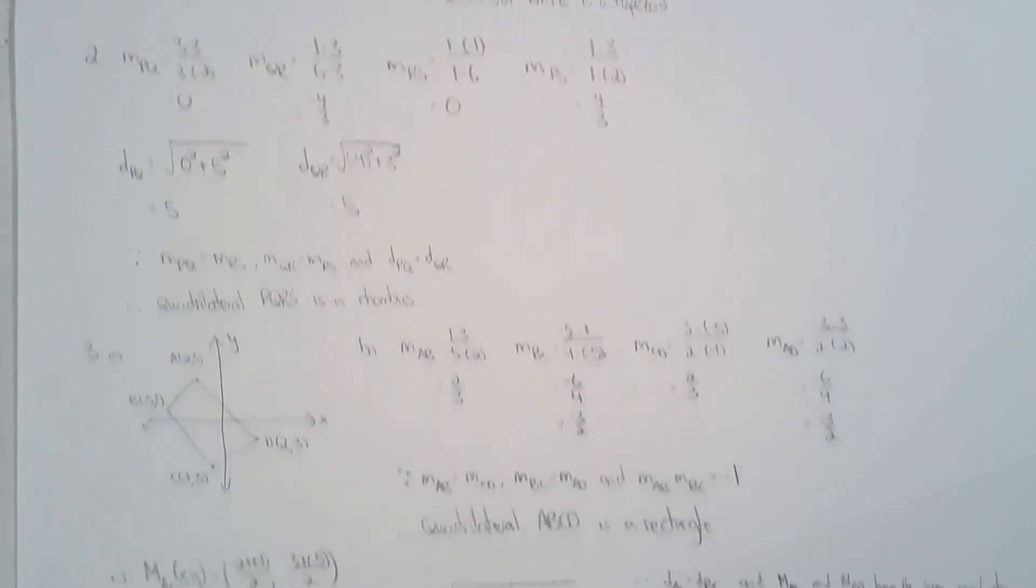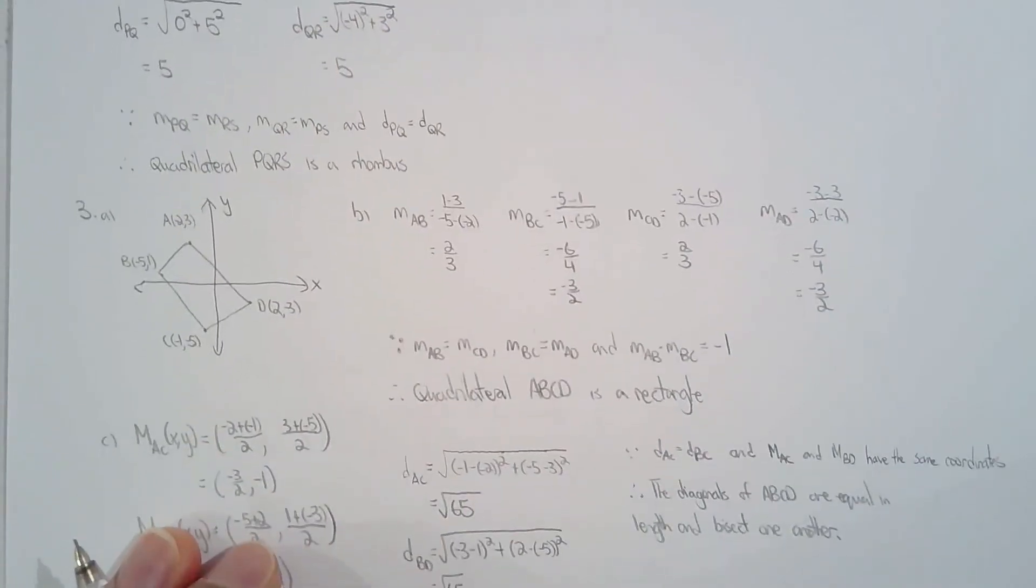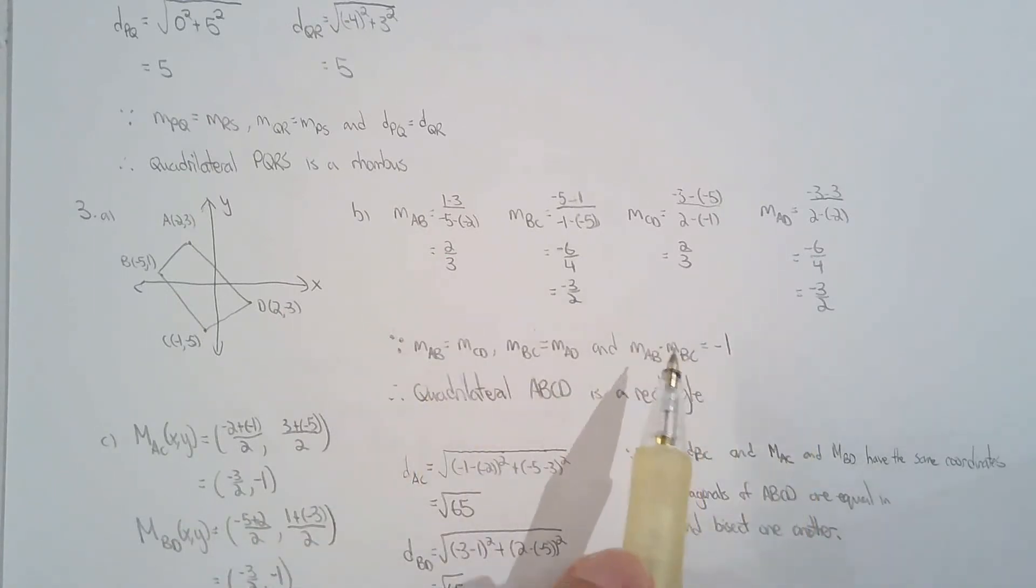For question three, verify it's a rectangle. I solve for the slopes and see that adjacent sides are perpendicular to each other. Once I know that, it's definitely a rectangle. I don't care about the length of the sides. Whether it's a square or not doesn't matter because a square is simply a special rectangle. Once I show that, it's definitely a rectangle.